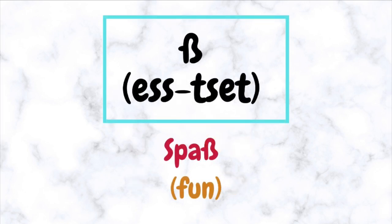ß (Eszett/Asset) — it has a shape of beta and is used when you want to write double S in a particular word. For example: Spaß, which means fun.